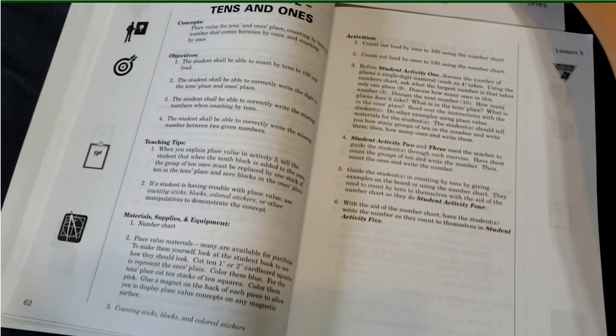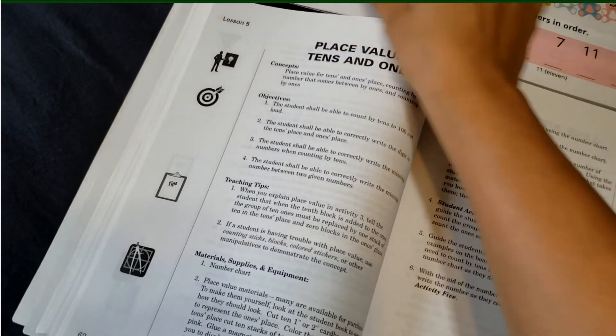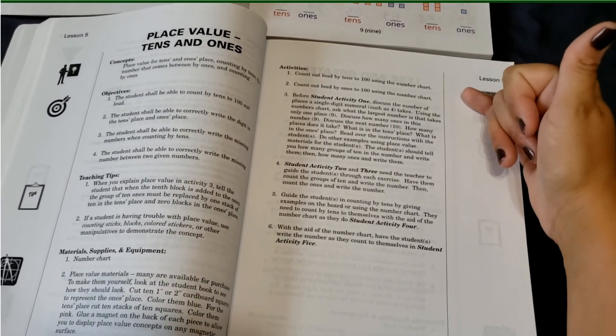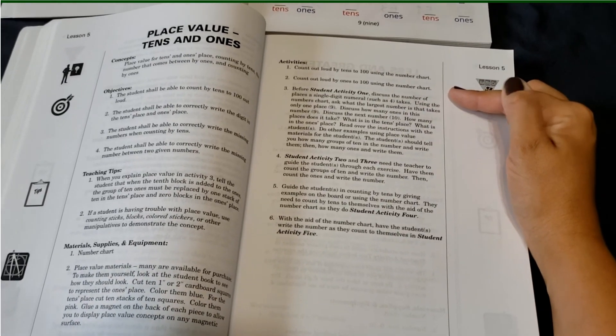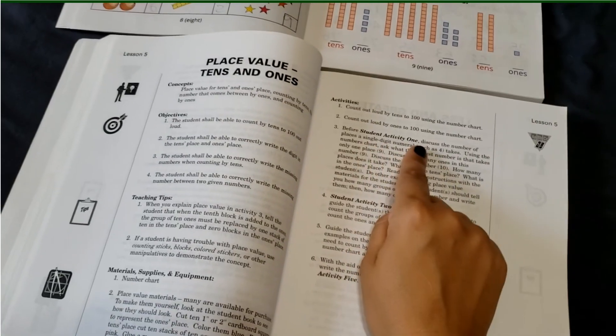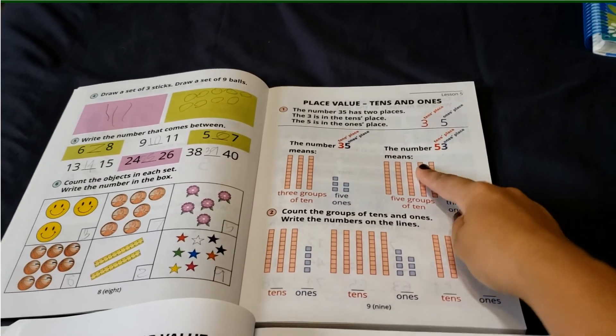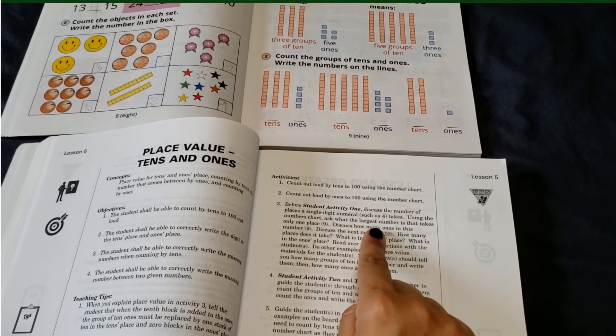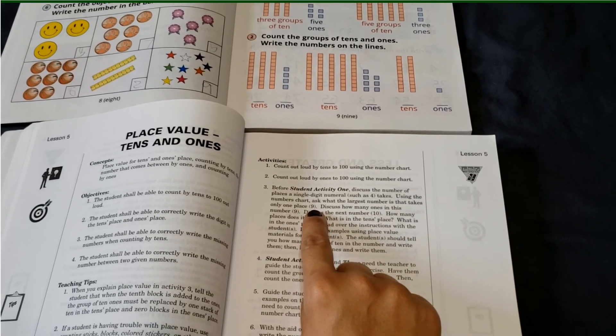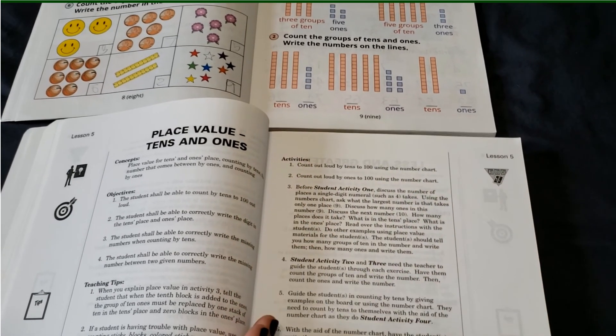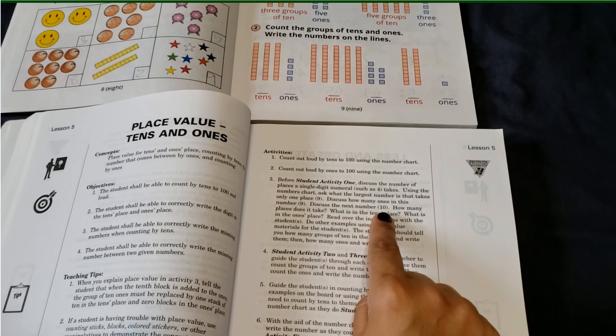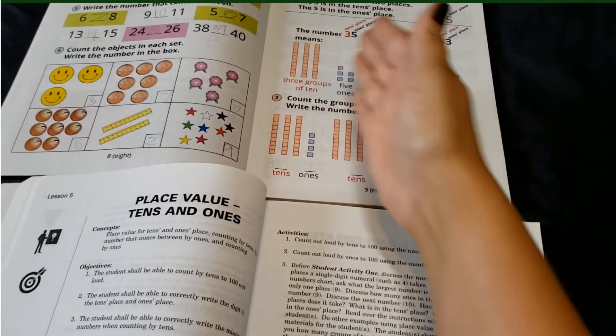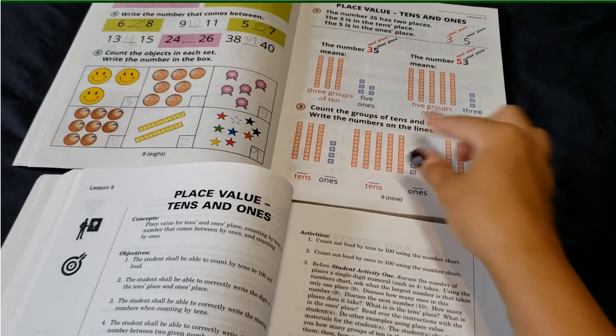And then it just gives you each activity. So for the first activity, we're going to count aloud together by tens to a hundred. And we can use the number chart to create that visual association with what we are saying. And then we can count out loud by ones to 100 doing the same thing using the number chart. Then before student activity one, which is this section here, then we're going to discuss the number of places in a single digit number such as four. And then using the number chart, we're going to ask what the largest number is that takes only one place. So nine is as big as we can go before we have to add the tens place to our number. Then we discuss number 10 and so on. And this is just giving our student a visual to go with learning the ones place and the tens place and what that means with the written number and then also a visual association with it.